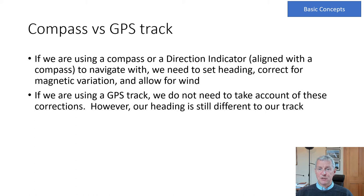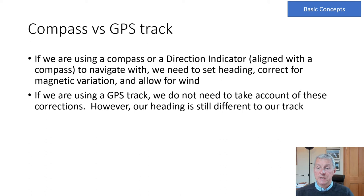In some aircraft we have a compass; in others we use a GPS track. At Cambridge, GBODU's compass is pretty awful and won't give a reliable heading, so we'll be using a GPS track for navigation. If using a compass we fly a heading corrected for magnetic variation and allow for wind to achieve the desired track. If using GPS track, we don't need to account for those separately, but the aircraft will still be pointing in a slightly different direction to the track shown on the GPS.